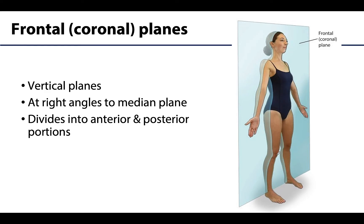The frontal or coronal planes run at right angles to the median plane. The frontal planes divide the body into anterior and posterior parts, or front and back parts. There is a cranial suture that runs right about here called the coronal suture — think crown of the head — and that is where the name coronal comes from; the two terms mean the same thing.